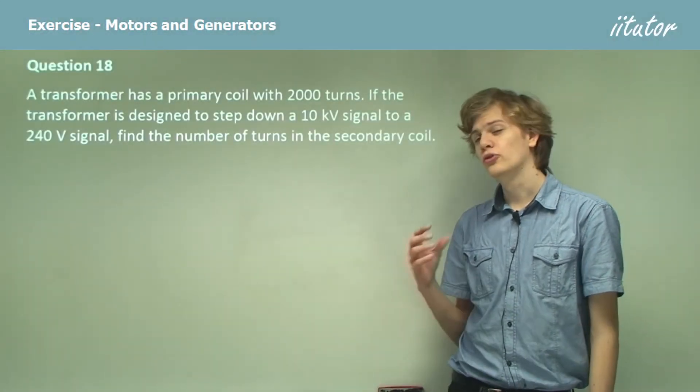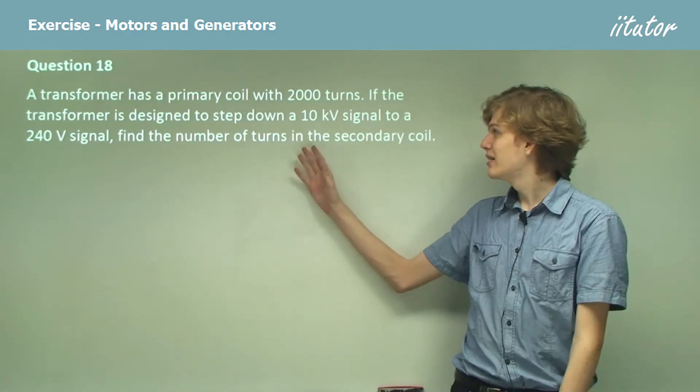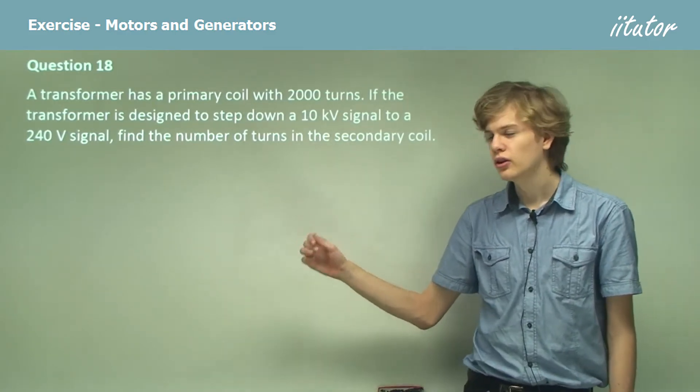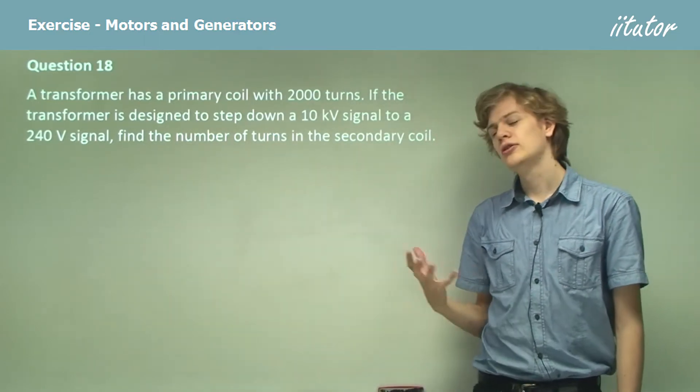A transformer has a primary coil with 2,000 turns. If the transformer is designed to step down a 10 kilovolt signal to a 240 volt signal, find the number of turns in the secondary coil.